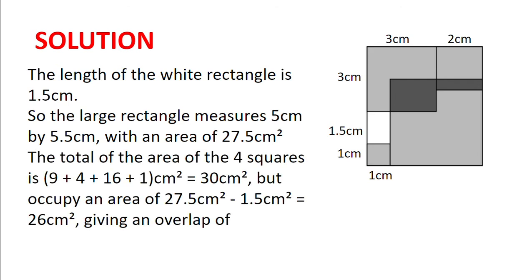Now the total area of the four squares is 9 plus 4 plus 16 plus 1, which is 30 centimeters squared, but they occupy an area of 27.5 centimeters squared, the total area of the rectangle, minus 1.5 centimeters squared, the unshaded rectangle, which is 26 centimeters squared, giving an overlap of 30 centimeters squared minus 26 centimeters squared, which is 4 centimeters squared.